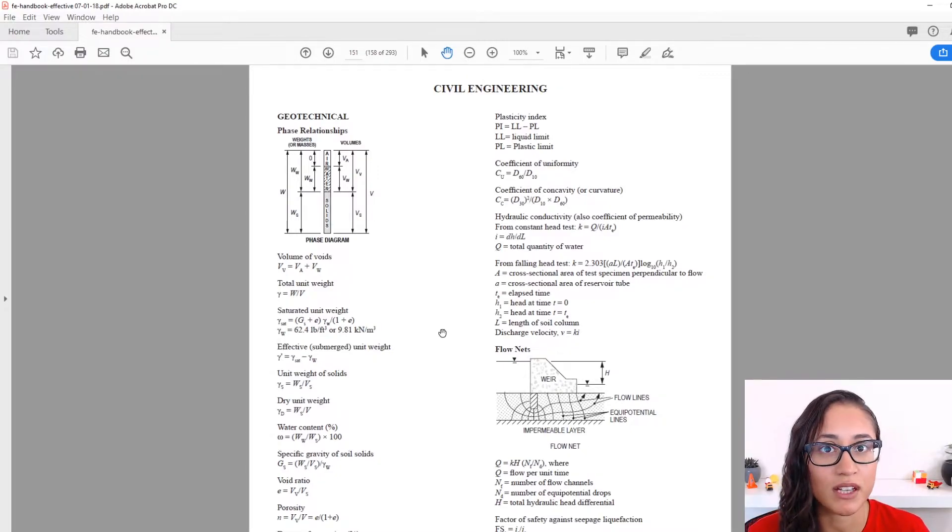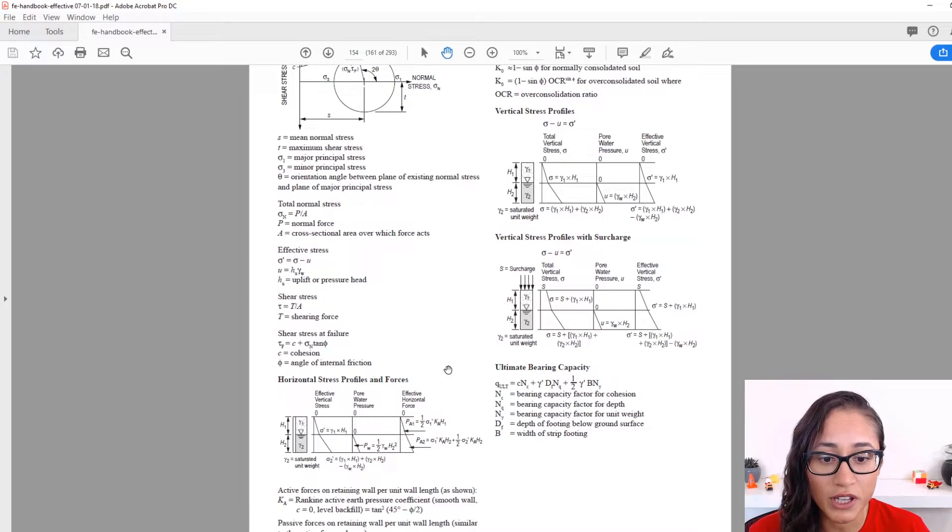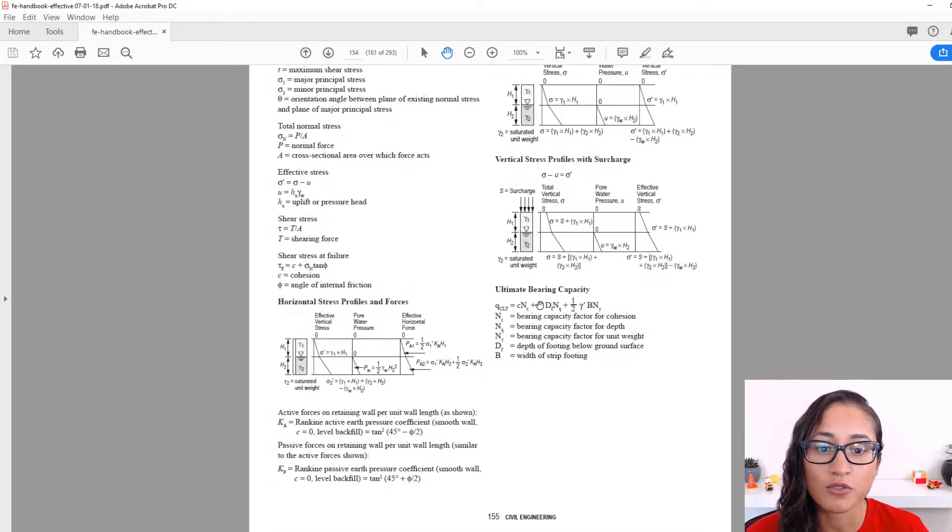But in our question, we were not given gamma saturated. We were just given the unit weight of soil. So all you gotta do is just change gamma prime for gamma and everything else in the equation stays the same.